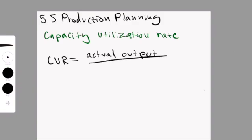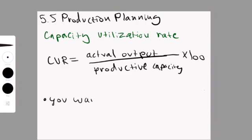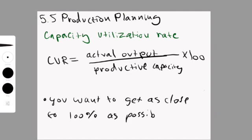This calculation is done by doing the actual output divided by the productive capacity times 100. Essentially, actual output is how much you are selling, how much of what you're doing is being used. Your productive capacity is the amount you can use. So the example they used in the book is a hotel has 100 beds and on average, 80 beds are filled. Therefore, you would take 80 divided by 100 times 100, which equals 80%. And you want to be as close to 100% as possible.